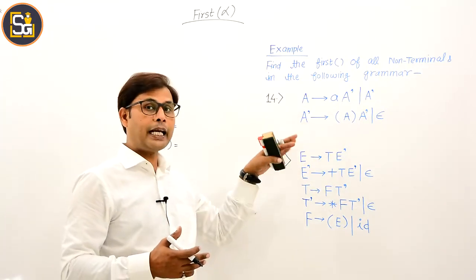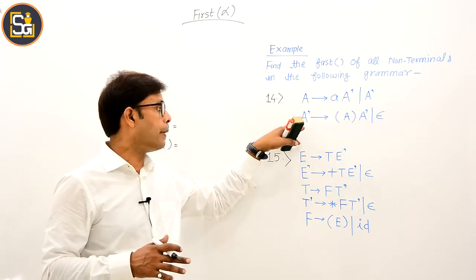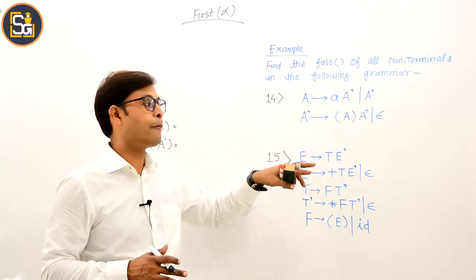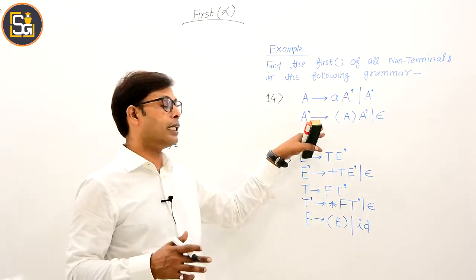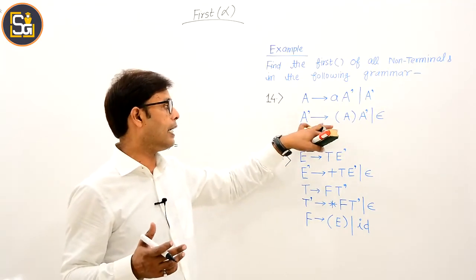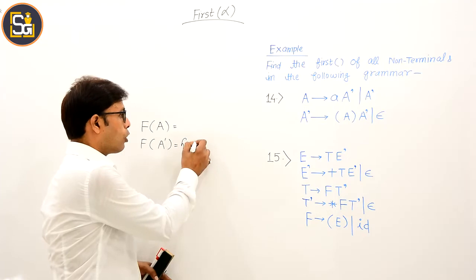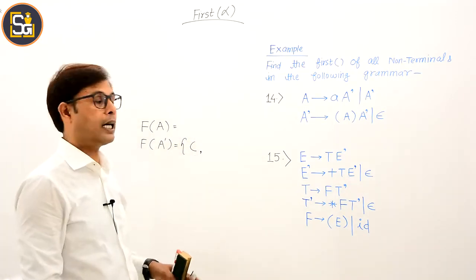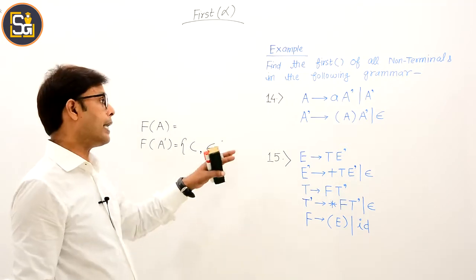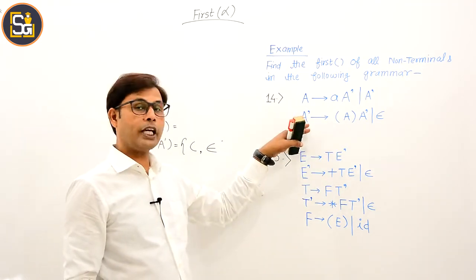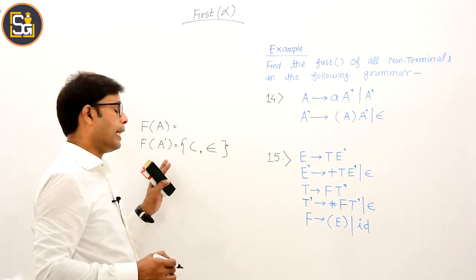A-dash ka FIRST nikalte hain. A-dash ke FIRST mein wohi aayega jo A-dash se derive ho raha hoga. Production pick karna padega — A-dash derives opening parenthesis A-dash closing parenthesis. Agar yeh production pick karte hain, to kisi bhi string ki starting opening parenthesis se hogi, and therefore opening parenthesis iske FIRST mein aana hi hai. A-dash null bhi derive kar raha hai, and therefore null bhi iske FIRST mein aayega. A-dash aur kuch derive nahi kar raha, isliye A-dash ka FIRST itna hi hoga.